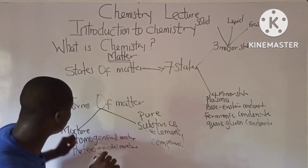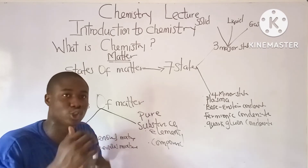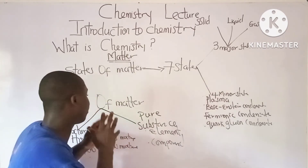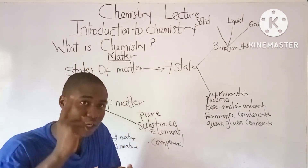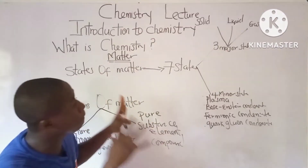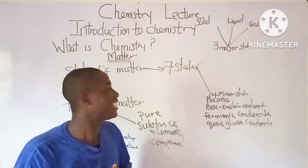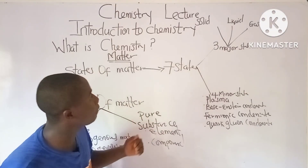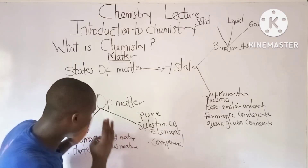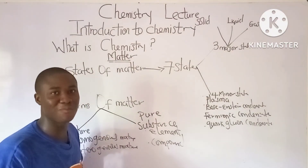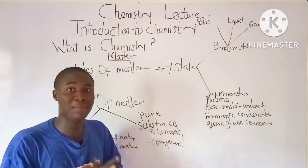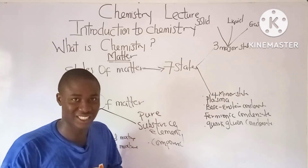A homogeneous mixture is a mixture with a uniform composition, while a heterogeneous mixture is one in which the composition is not uniform. In the next chemistry lecture we'll talk about all of these states and forms of matter in detail. My name is Bright Edu — thanks for watching.